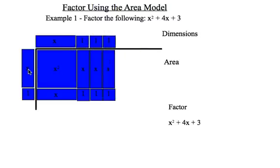Just do a quick check: x times 1 is x, 1 times 1 is 1. That looks good. So my side dimension here is x + 1. My top dimension is x + 3.